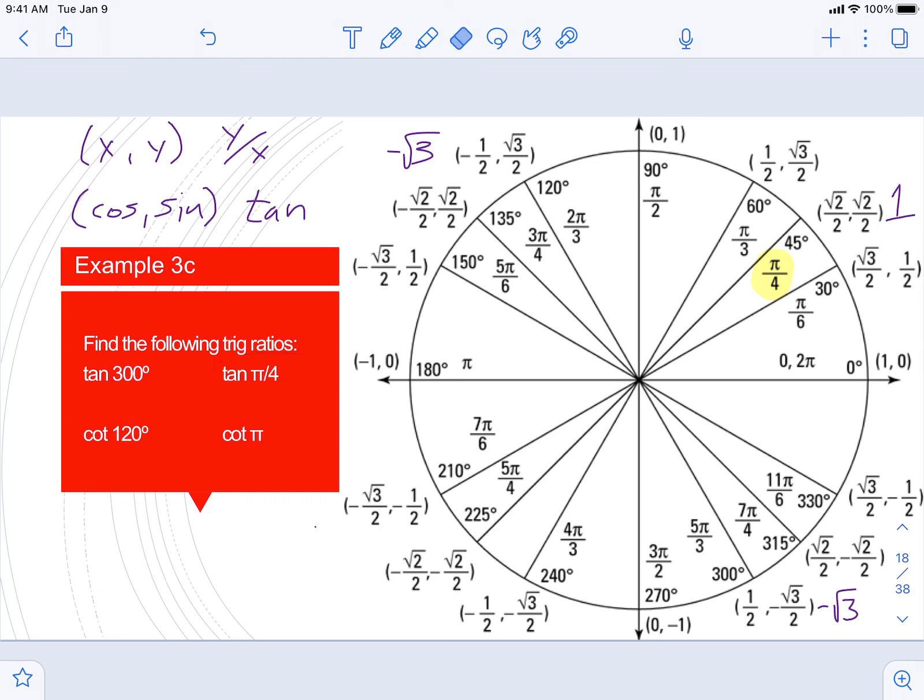And then our last one, cotangent of pi. We are finding pi, and the tangent value for pi, the number on the outside, is a 0. Now if we do the reciprocal, it's going to be x over y instead of y over x. So the x value is negative 1, the y value is 0, so now it's negative 1 over 0, which is undefined.